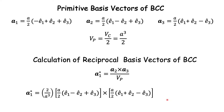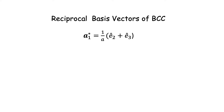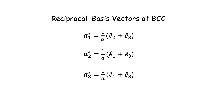If you do this, you will find the final expressions are very simple and symmetric: a1* = (1/a)(e2 + e3), a2* = (1/a)(e1 + e3), and a3* = (1/a)(e1 + e2). Again, this is a nicely symmetric form in the sense that in a1*, e1 is missing; in a2*, e2 is missing; and in a3*, e3 is missing.